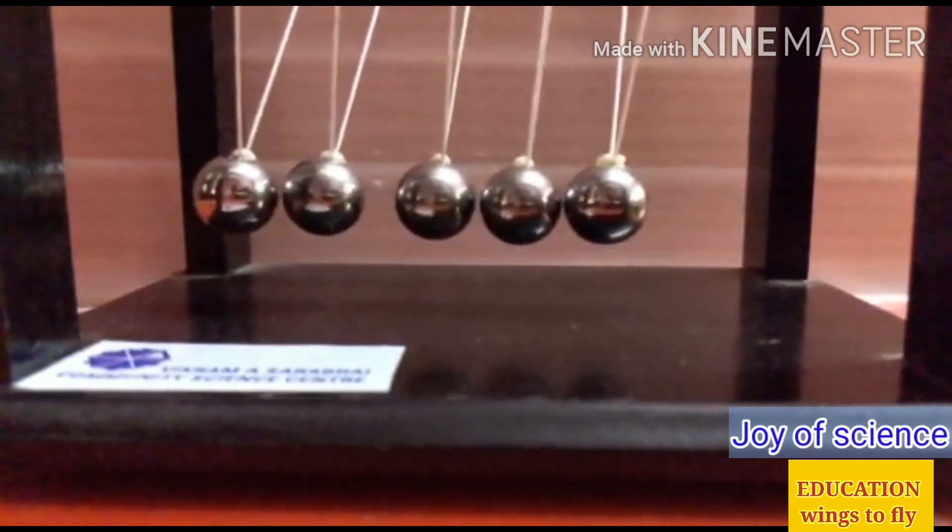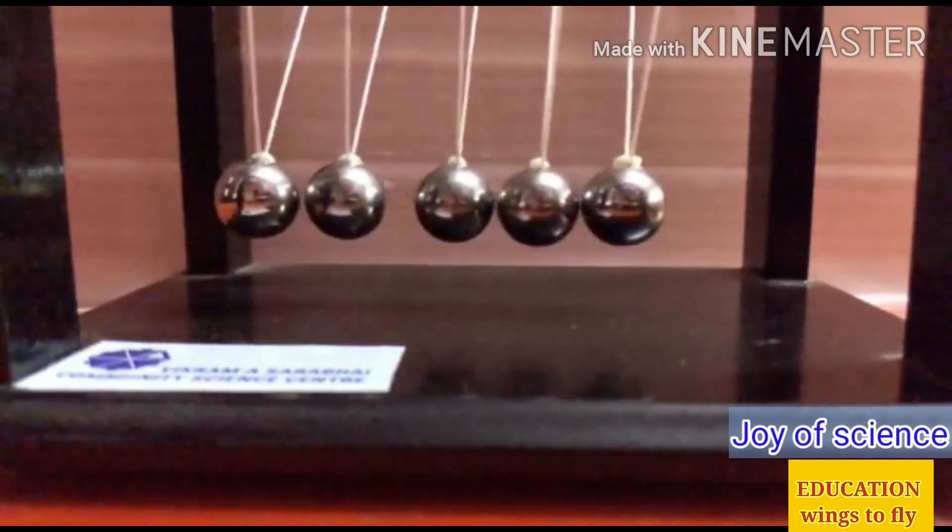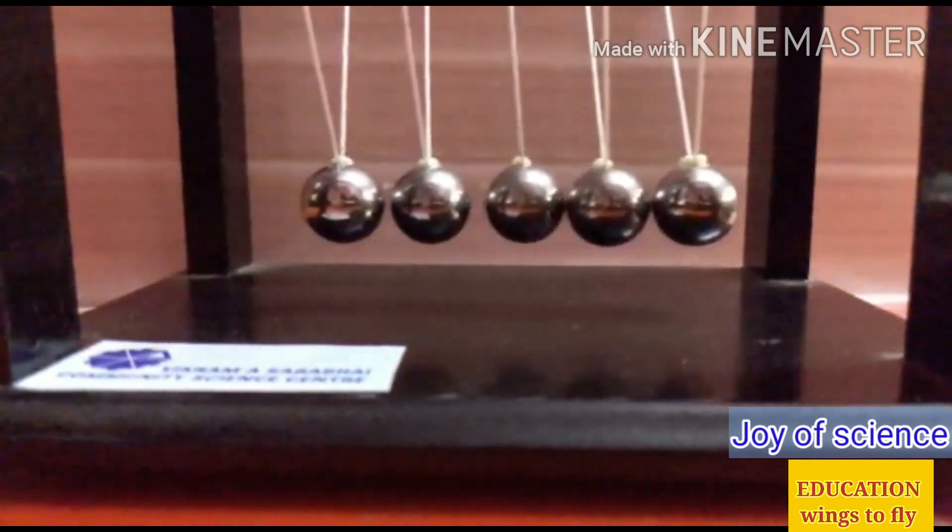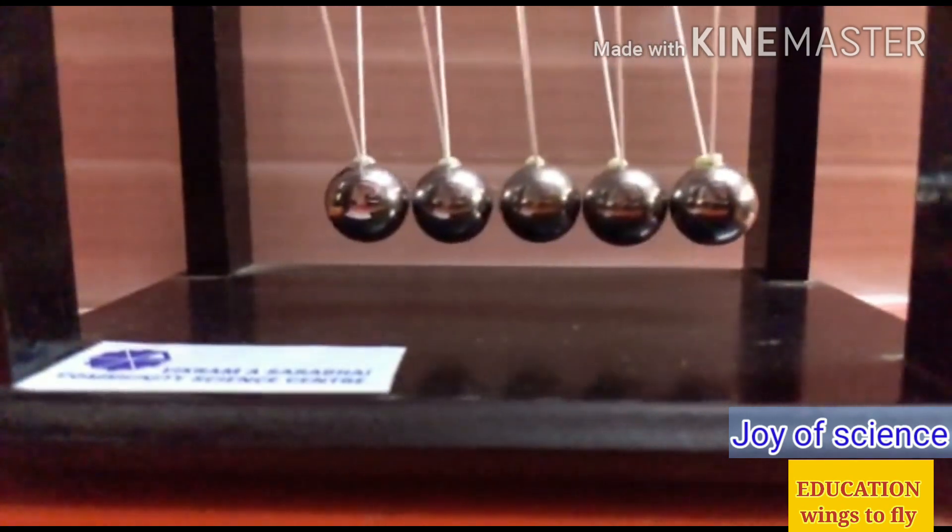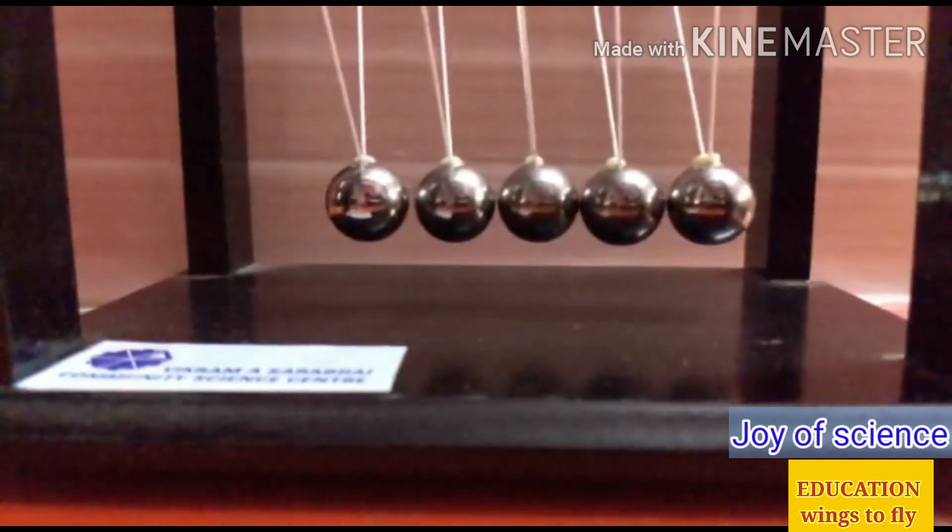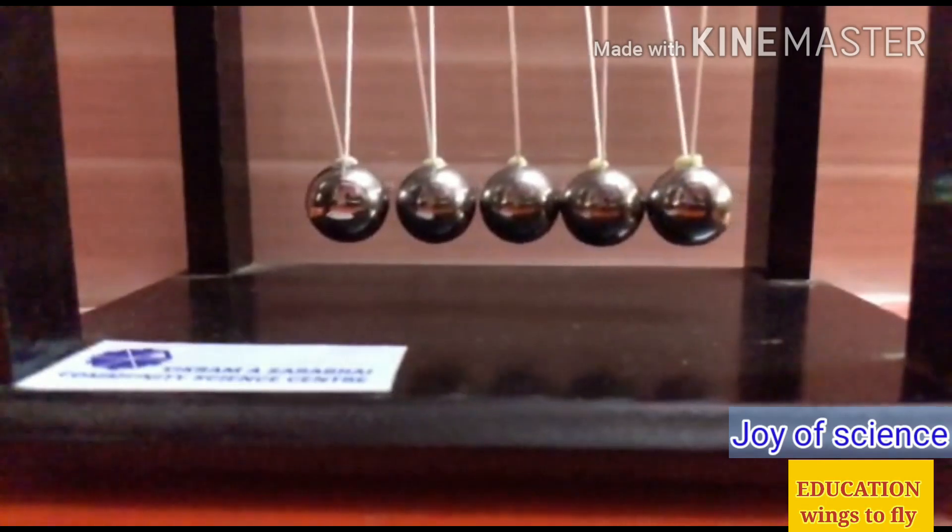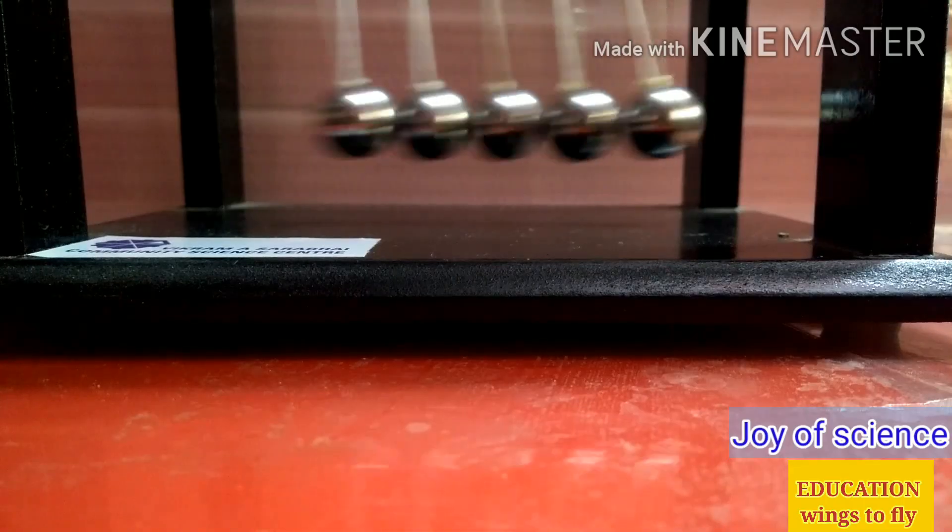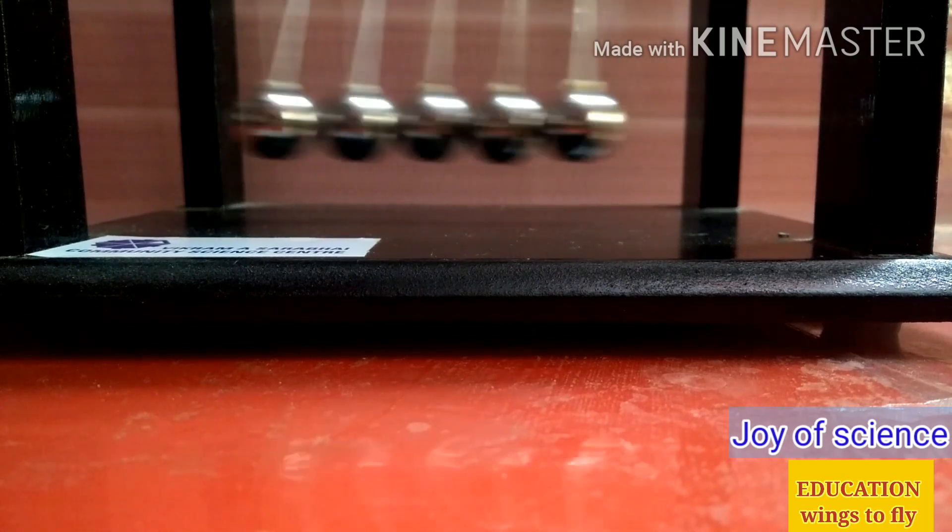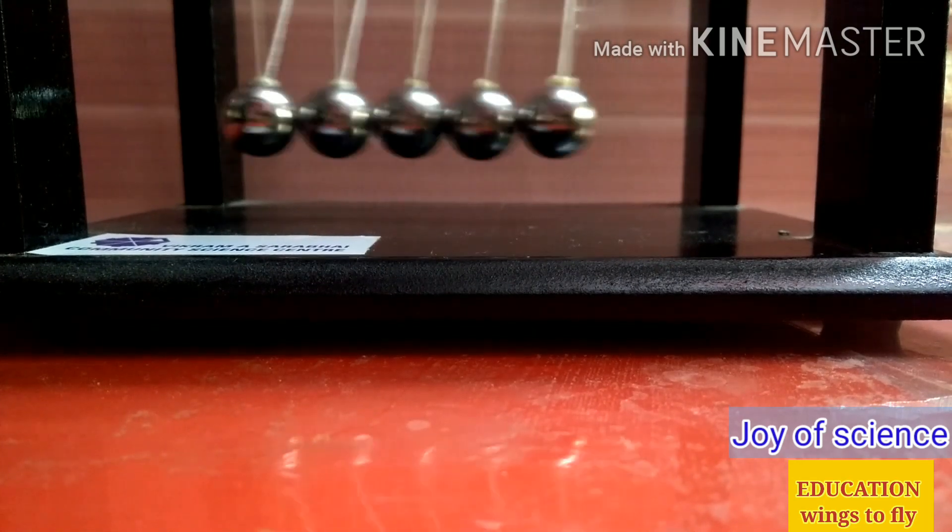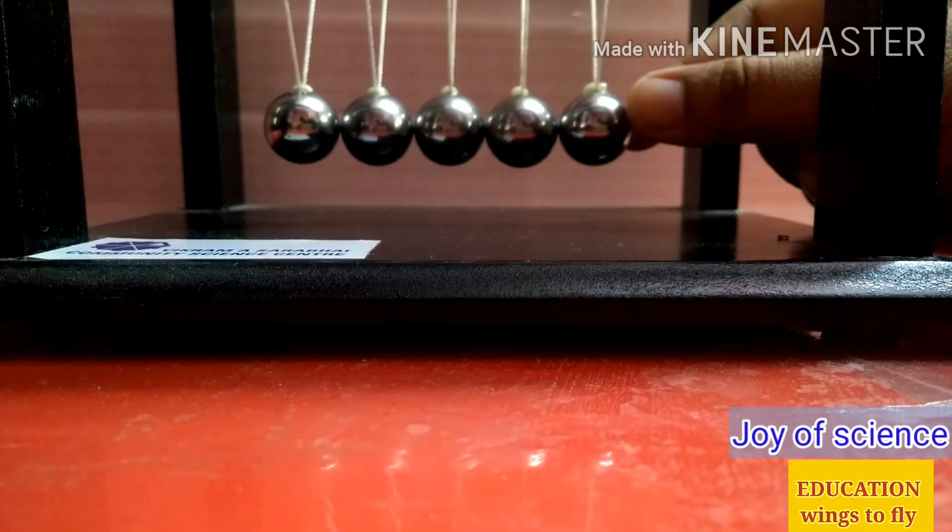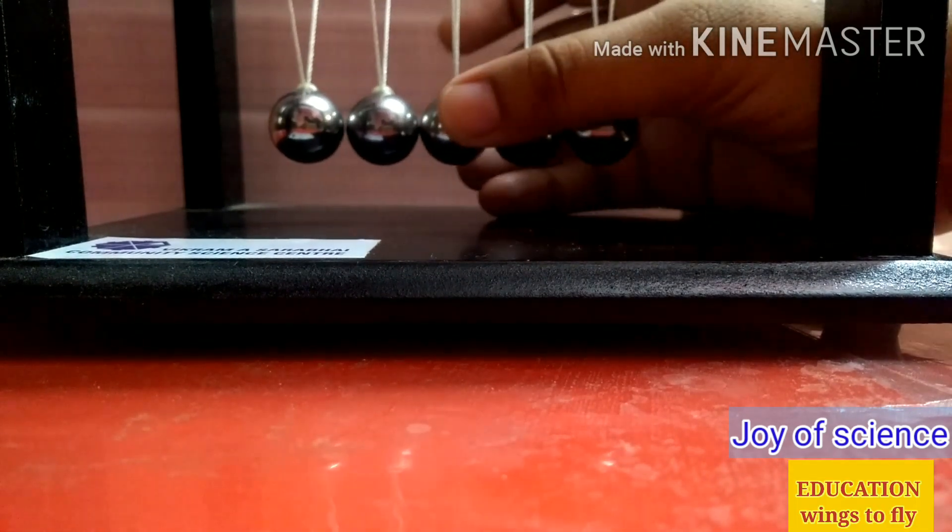So now it shows that to every action there is an equal and opposite reaction. On the left-hand side if I take two balls and release it, then on the left-hand side also the two balls will only come out. Now the same thing will happen with three balls, four balls or five balls. So quickly I am going to show you. Please observe it carefully.